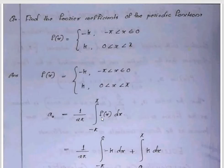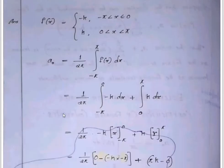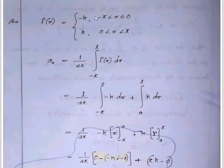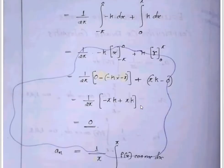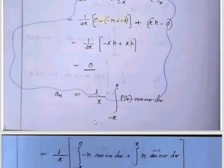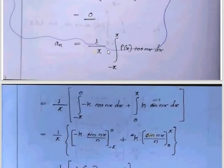Find the Fourier coefficients of the periodic function f of x equal to minus k when minus π less than x less than 0, and equal to k when 0 less than x less than π. We compute a0, an, and bn.